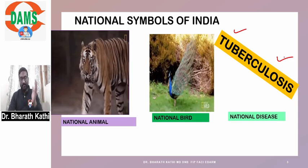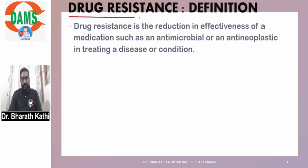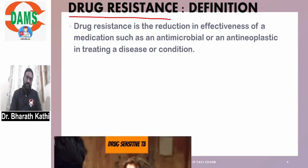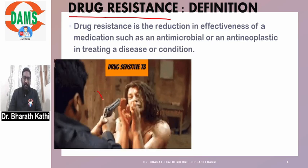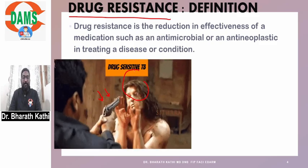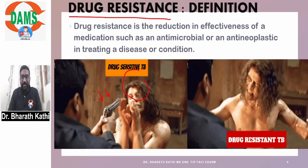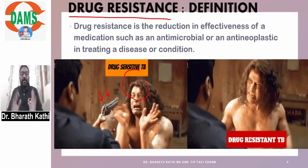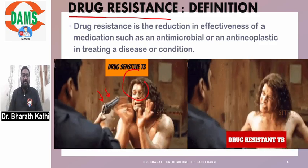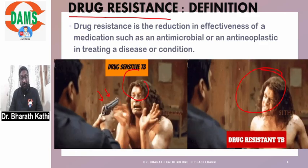Coming to drug-resistant tuberculosis — what is the actual meaning of drug resistance? Drug resistance means reduction in effectiveness of a medication, such as an antimicrobial or an antineoplastic, in treating a disease or condition. Drug-sensitive TB accepts all treatment options and can be treated very well, whereas drug-resistant TB is very aggressive and you will not have sufficient weapons to deal with it.